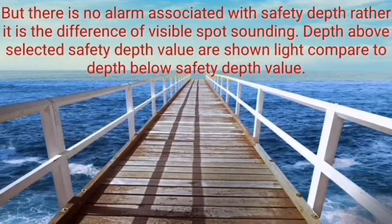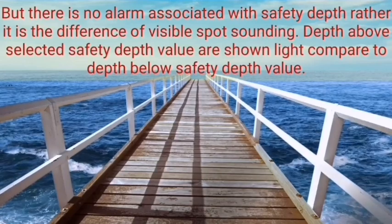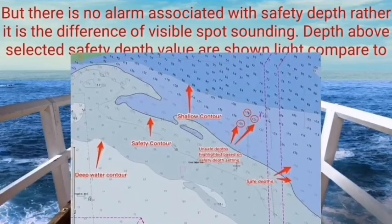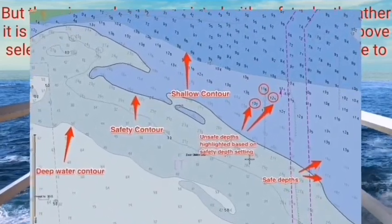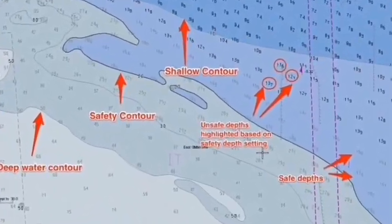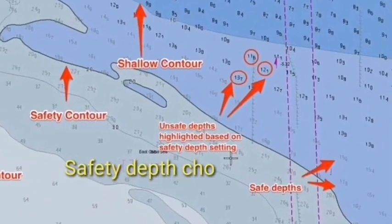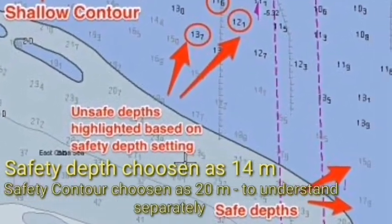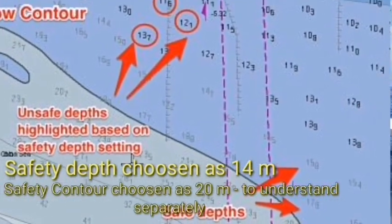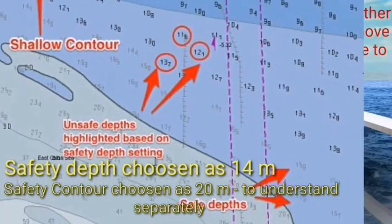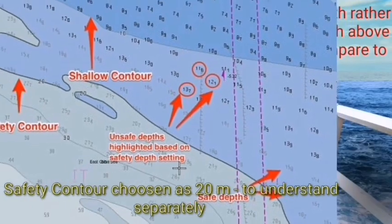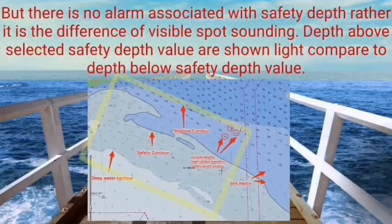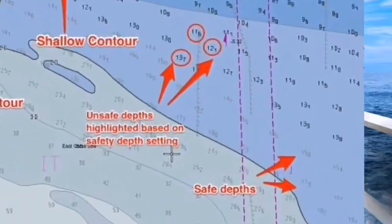Rather than an alarm, safety depth is a difference of visible spot soundings. Depths above the selected safety depth value are shown lighter compared to depths below the safety depth value. So with safety depth set to 14 meters, depths greater than 14 meters are shown lighter compared to depths less than 14 meters.